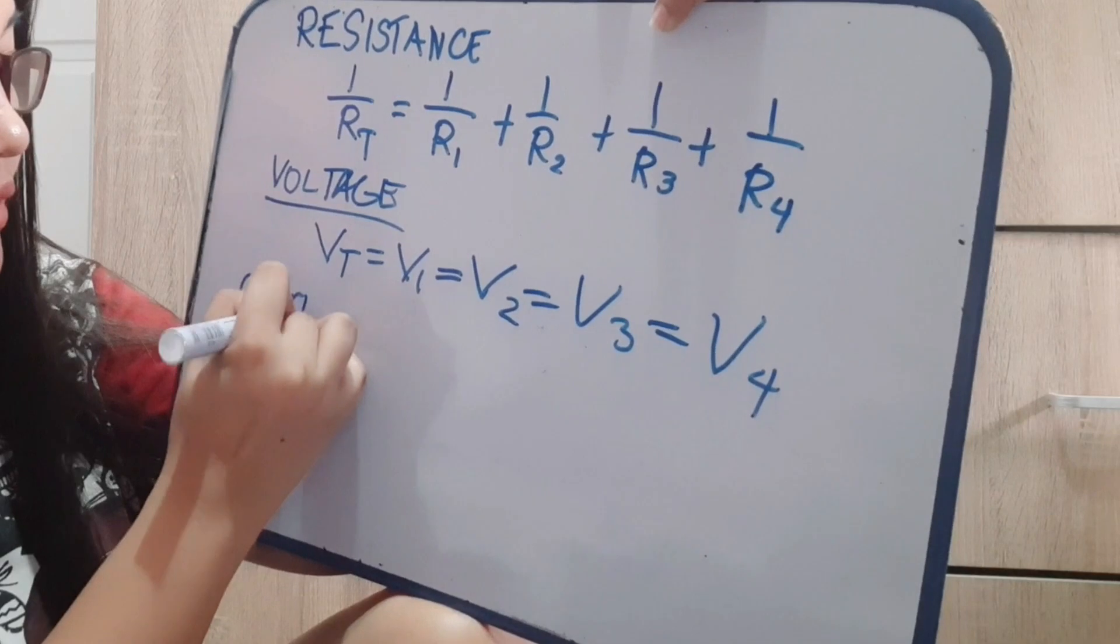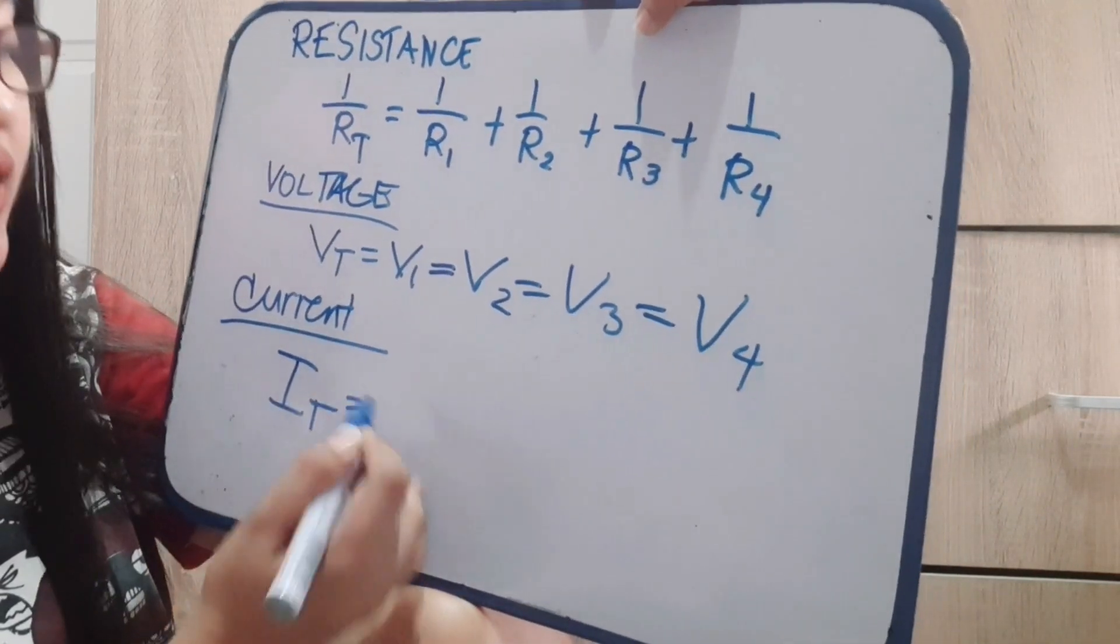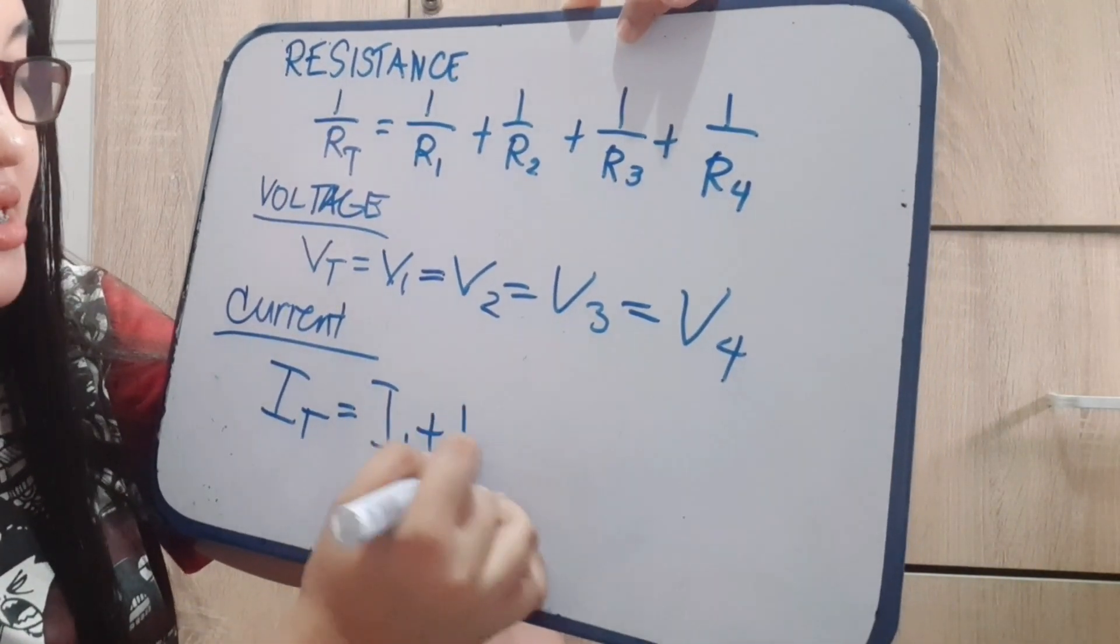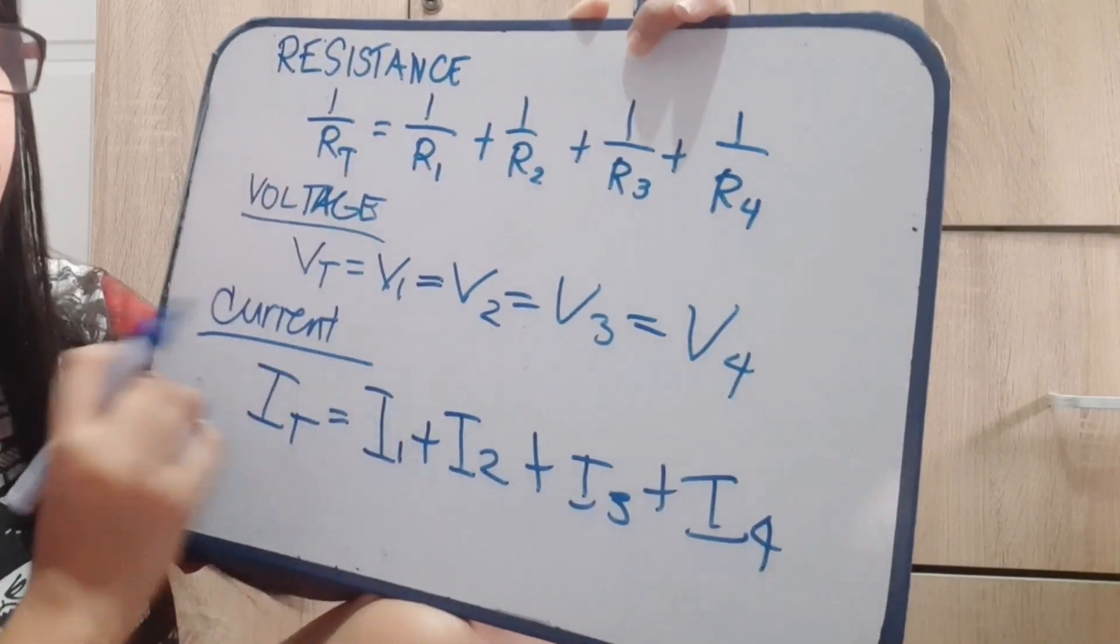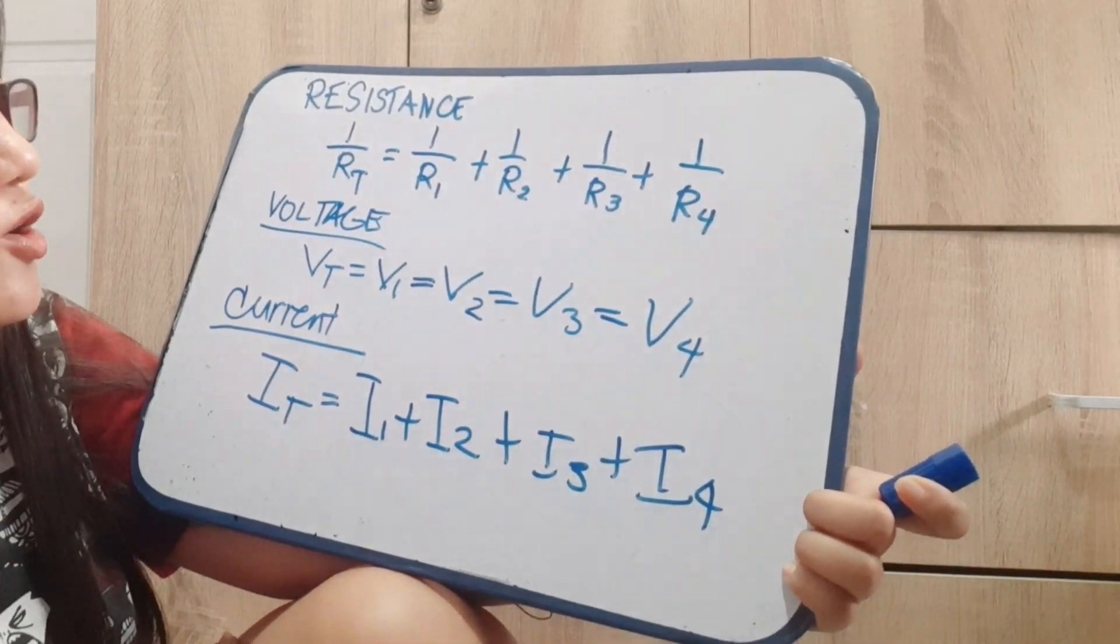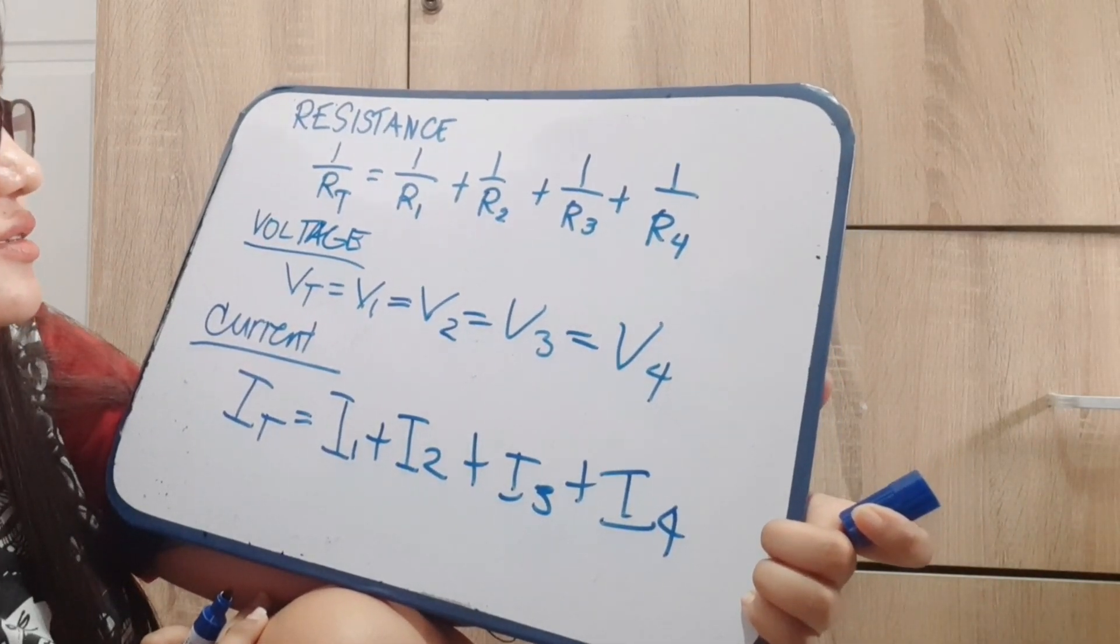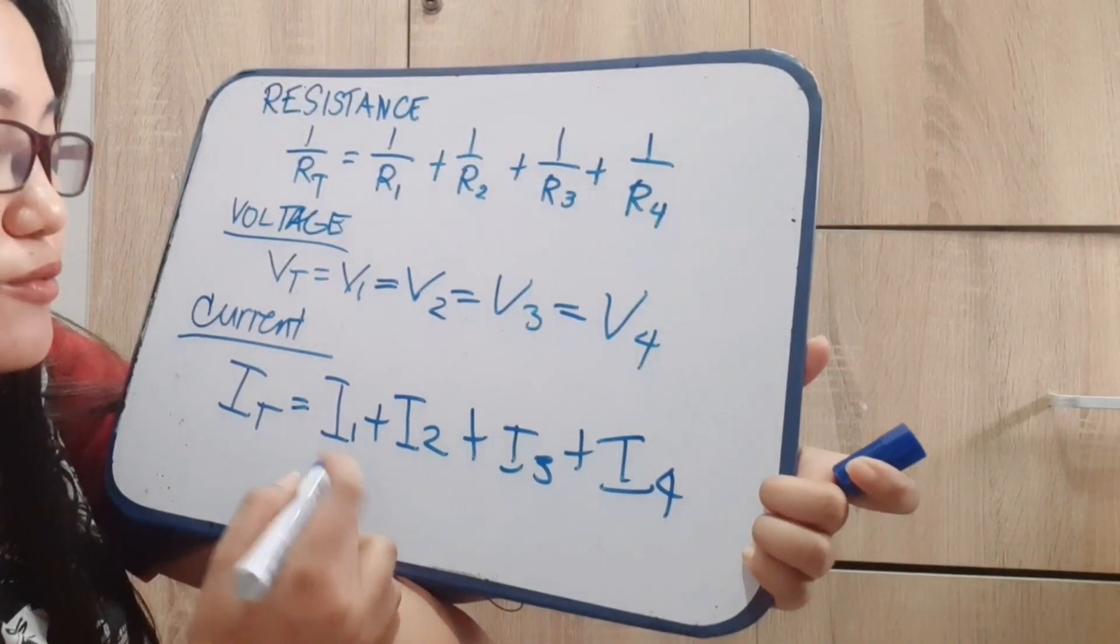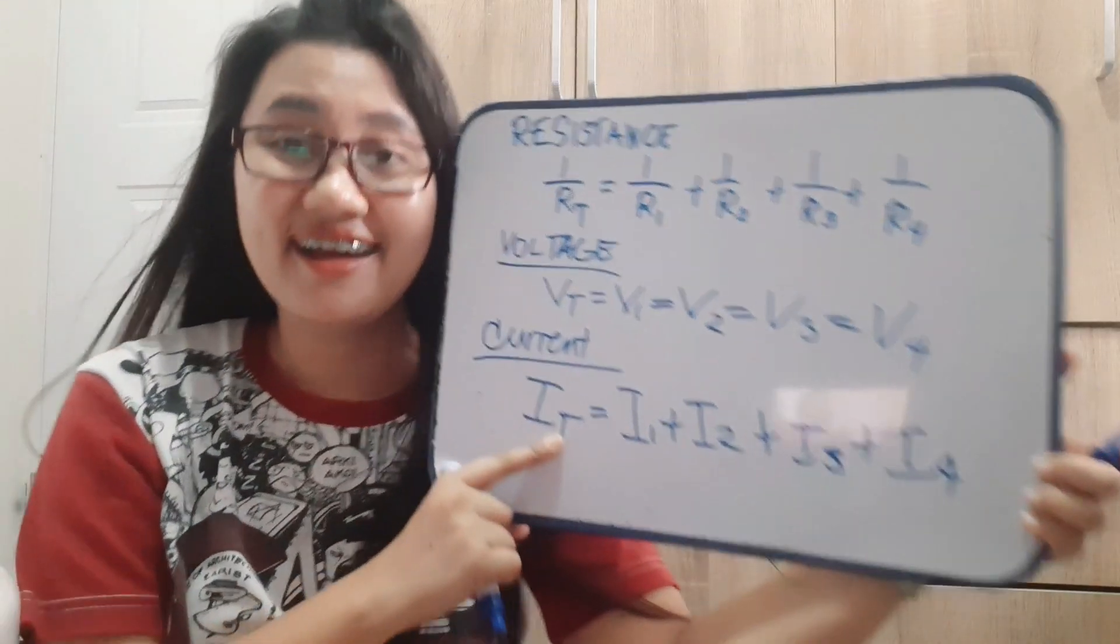How about current? When it comes to current, the total current is equivalent to current 1 plus current 2 plus current 3 plus current 4. So that is the total current of each for our parallel circuit. It means you just add the current of 1, 2, 3, 4 to get the total current.